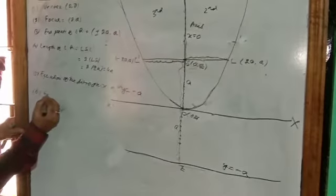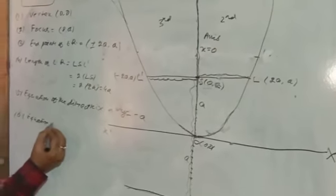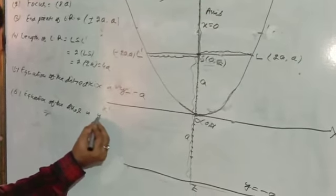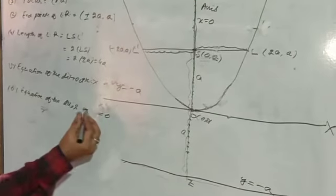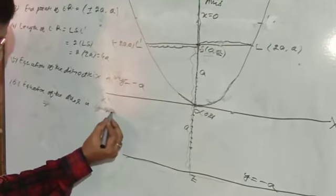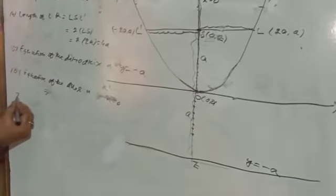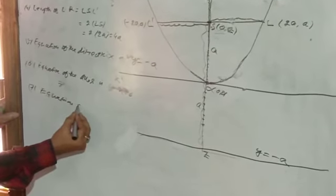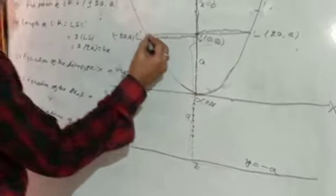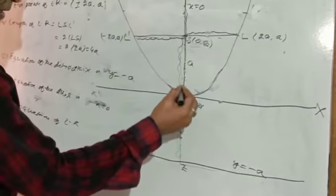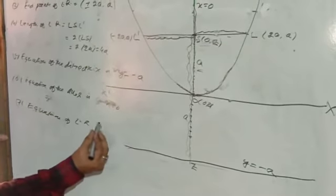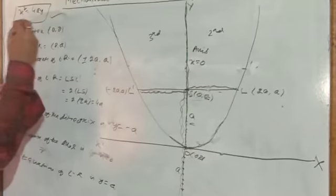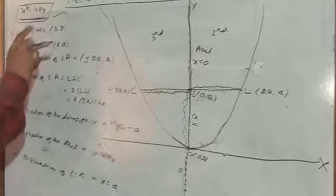The axis of the parabola is the y-axis, whose equation is x = 0. The seventh point: the equation of the latus rectum is a line parallel to the x-axis cutting the y-axis at a distance a, so its equation is y = a. These are the seven key properties of the parabola x² = 4ay.